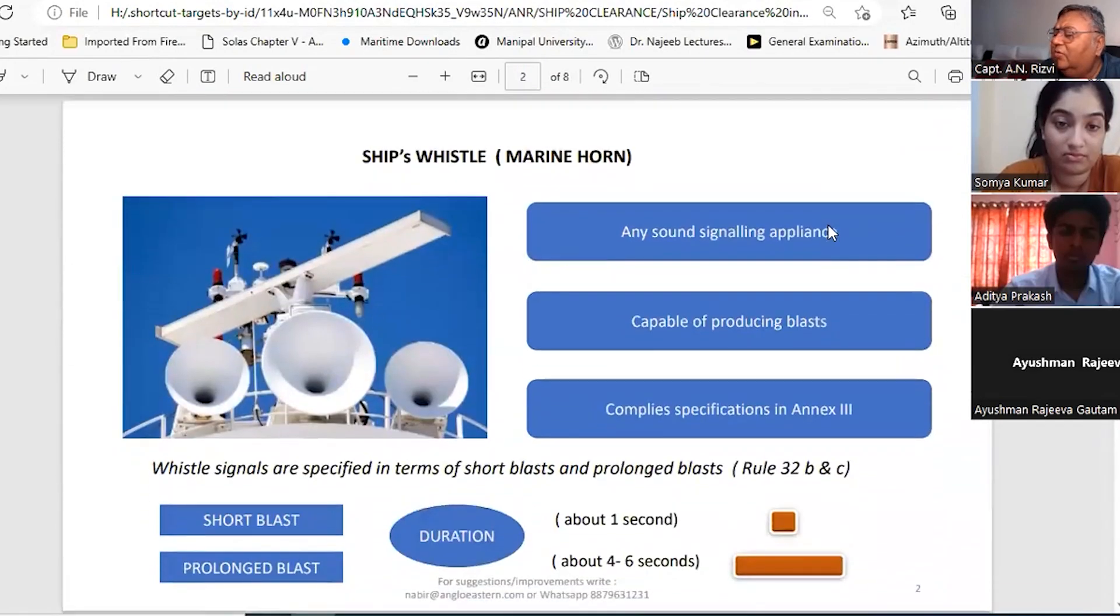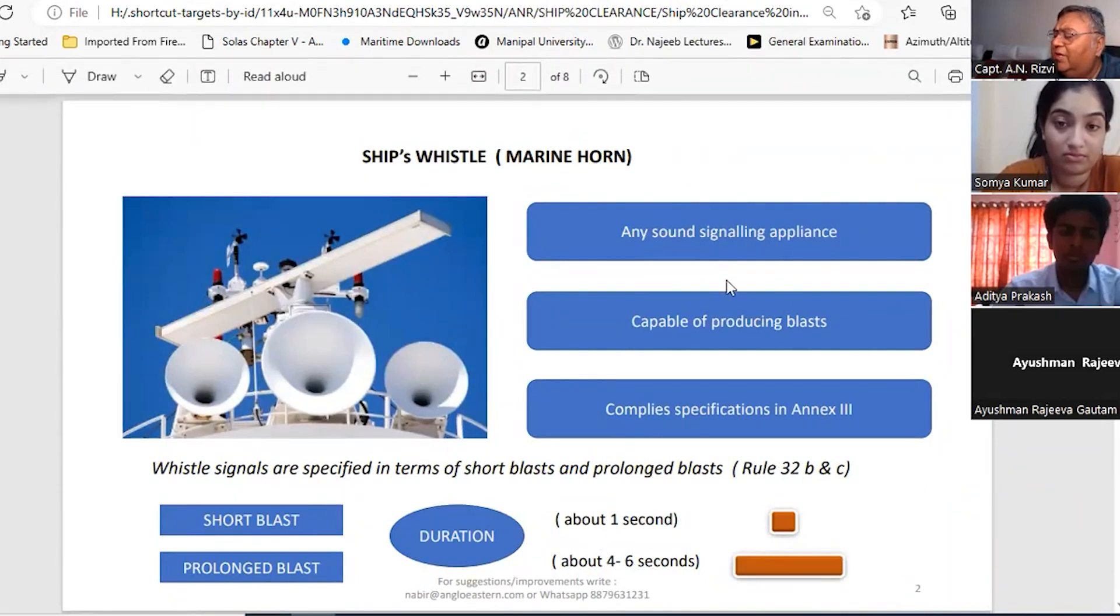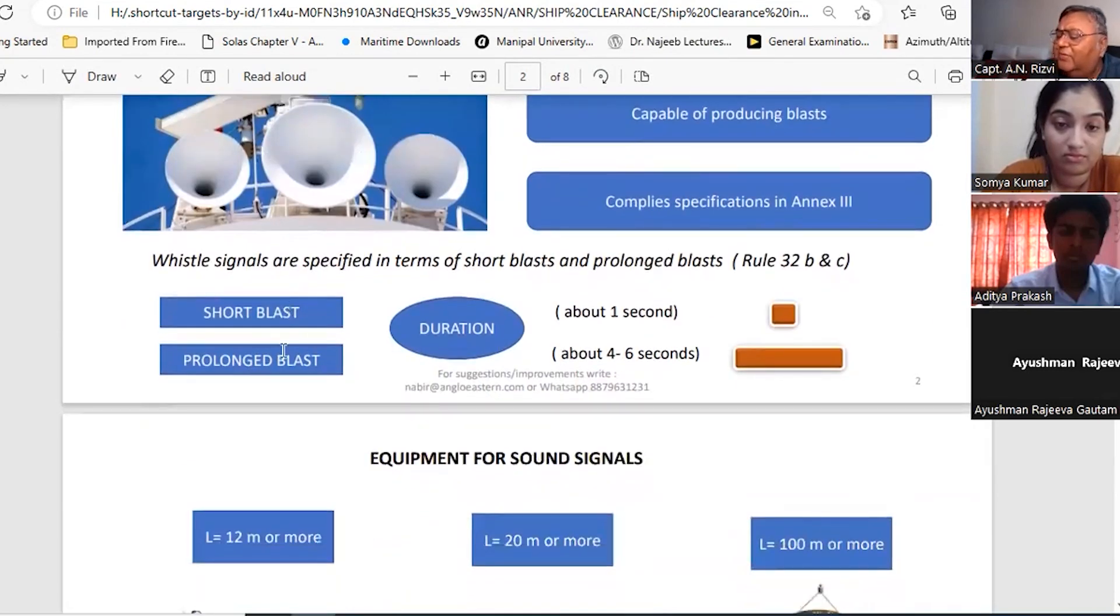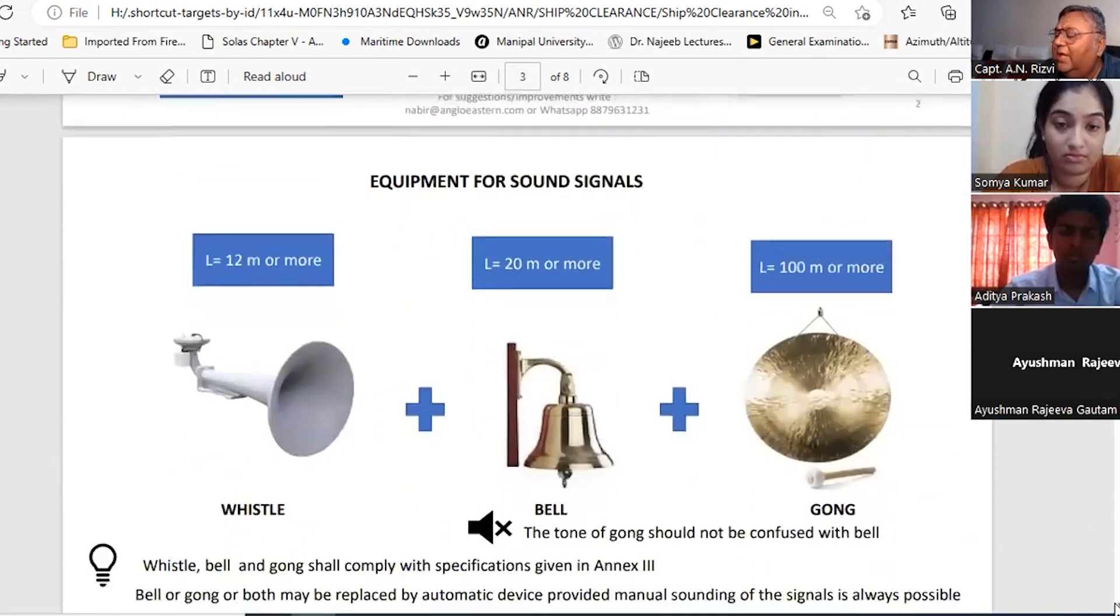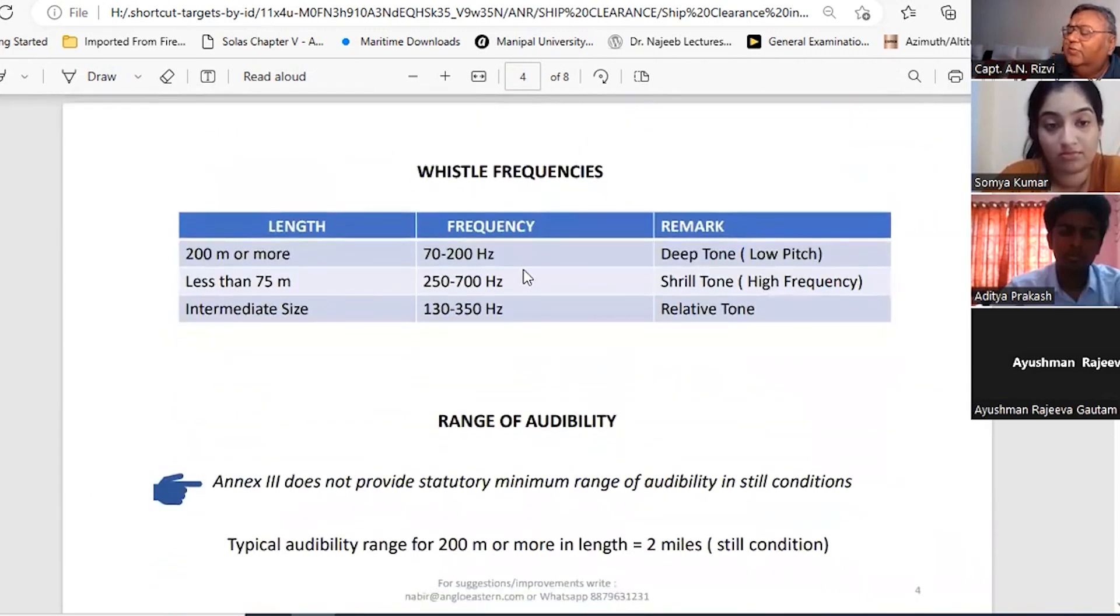Now let's talk about signals. Ship's whistle signal - signals have to be made on ship's whistle, marine horn, etc. So it can be done on any sound signaling appliances which is capable of producing blast as per Annex 3. Short blast is one second, prolonged blast is four to six seconds. Then the equipment - if the vessel is less than 12 meters, whistle. If the vessel is 20 meters or more, then bell plus whistle. And if the vessel is 100 meters or more, then gong, bell plus whistle. Whistle frequency - if the vessel is 200 meters or more, then deep tone. And if the vessel is 75 meters or less, then shrill tone. The range is around two miles.